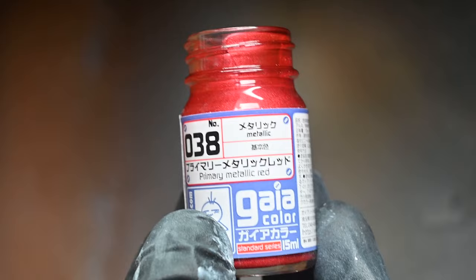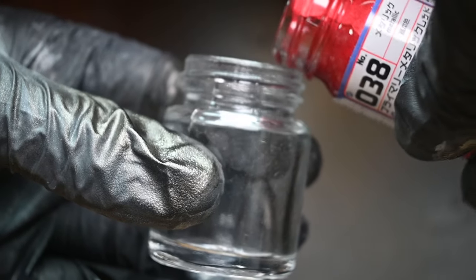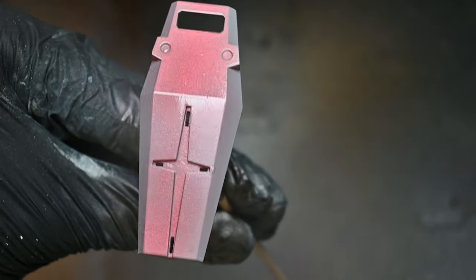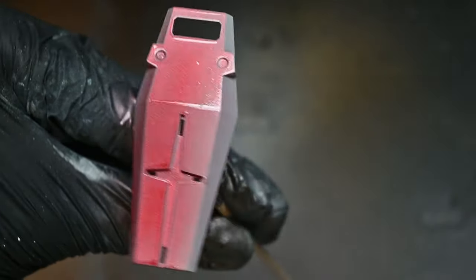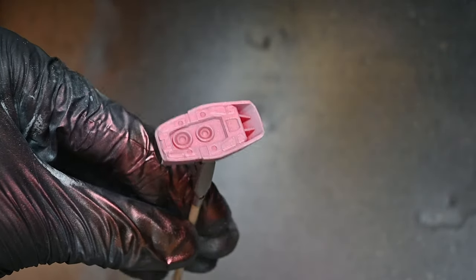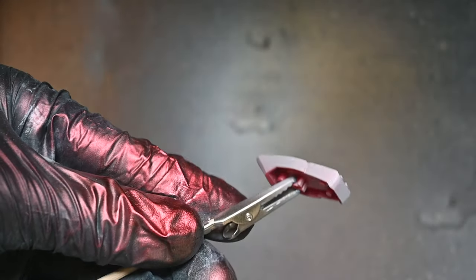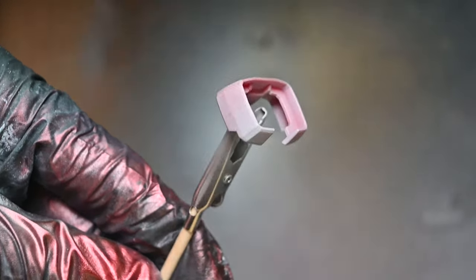Now I moved on to the primary metallic red. I used the primary metallic red, yellow and blue on this build for the RX-78. As you can see here I think I may have thinned it a little bit too much as it's pooling around the edges of the shield.